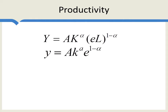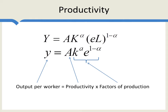Capital and labor can be combined in less efficient and more efficient ways, and a lower A now means a lower productivity — a less efficient combination of capital and labor. We can divide both sides by L to get this in terms of output per worker. Output per worker is thus explained by two factors: productivity and the factors of production, which are simply the capital-labor ratio and human capital.